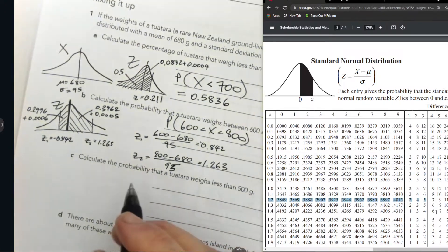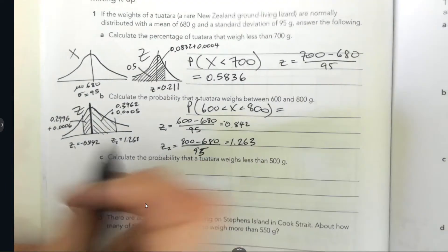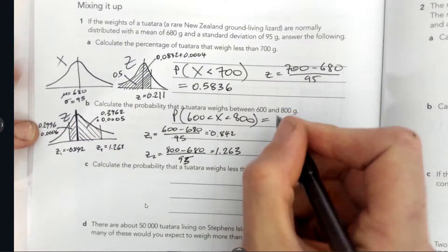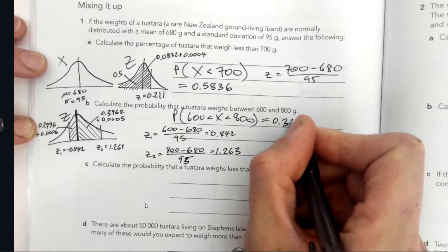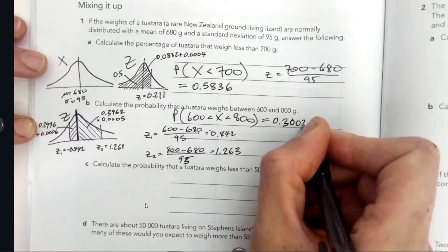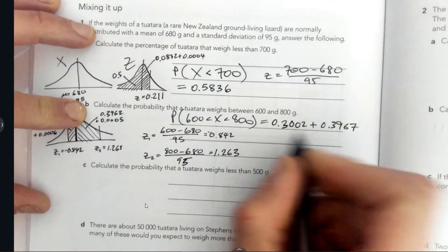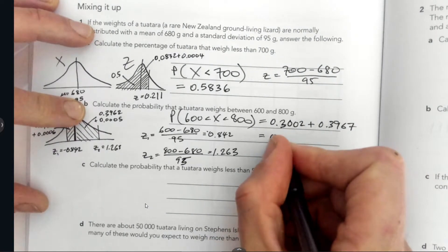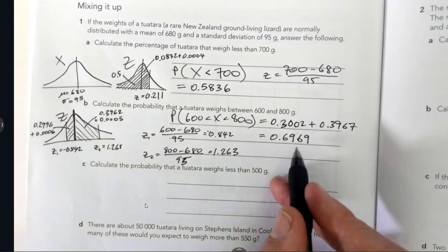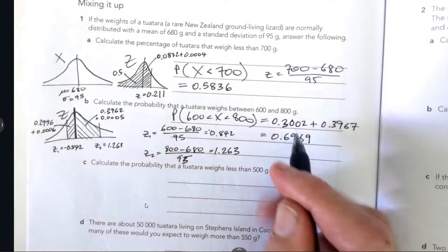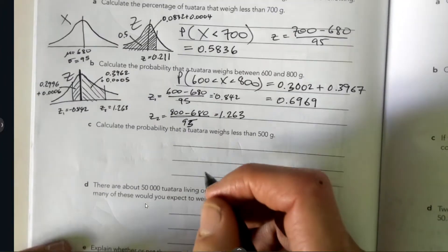Let's just do this one while we're on the table. 1.263, we'll go to 1.2. So 0.3962 and then the difference of 3, so that's plus 0.0005. Let's add these up. I'm going to do the addition in my head. It's going to be 0.3002 plus this one here, 0.3967. 0.6969. Very nice. Walker Maths have outdone themselves with this one. The probability that the tuatara weighs between 600 and 800 grams is 0.6969.